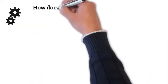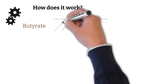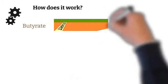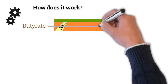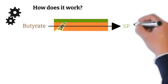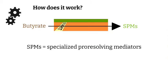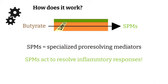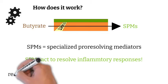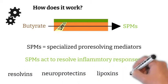So now we have butyrate — but how does it work? There are many biochemical mechanisms that butyrate can activate. One of the more important ones it can activate is specialized pro-resolving mediators, or SPMs for short. SPMs act to resolve inflammatory responses. There are several different kinds of SPMs: resolvins, protectins, lipoxins, and maresins.